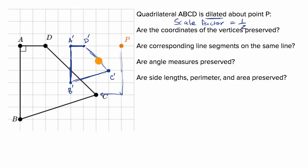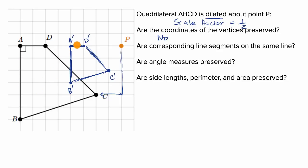I picked an arbitrary scale factor that I could draw. Are the coordinates of the vertices preserved? Well, all the vertices are at different coordinates, so no — none of those are preserved. The whole idea is to appreciate what gets preserved or doesn't under dilations. Are corresponding line segments on the same line? No — they're all parallel to each other. AB is parallel to A prime B prime, AD is parallel to A prime D prime, and so on. None of them are on the same line, so no.